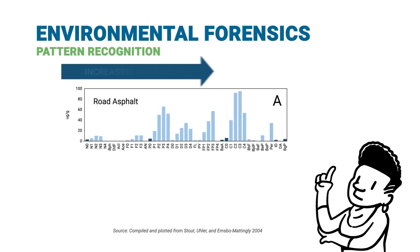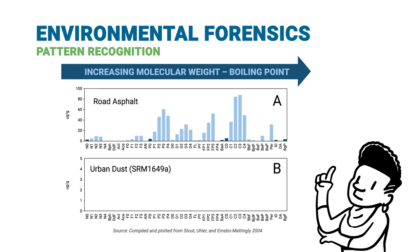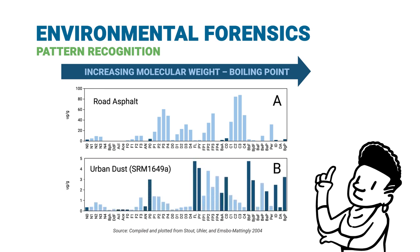Another technique is pattern recognition. In this figure, PAHs are ordered by molecular weight and samples representing two different sources are shown. The dark blue bars are parent PAHs. The light blue bars are alkylated PAHs, which occur in groups representing the degree of alkylation of the adjacent parent. The patterns show that road asphalt has a greater relative abundance of alkylated PAHs and shows the characteristic bell shape of the alkyl homolog groups — this is a characteristic petrogenic signature, which makes sense for road asphalt.